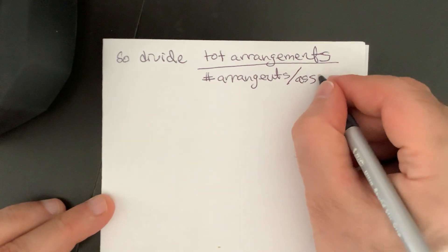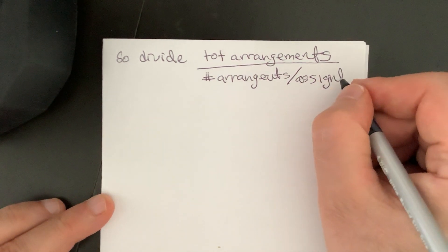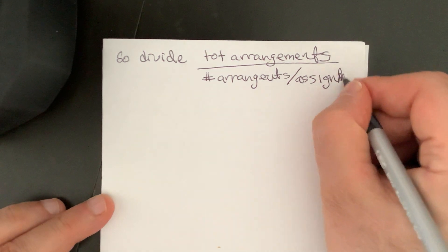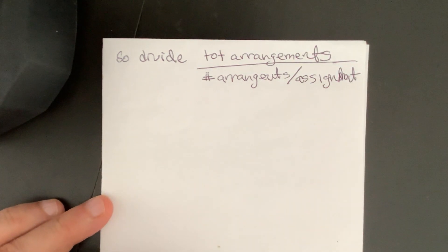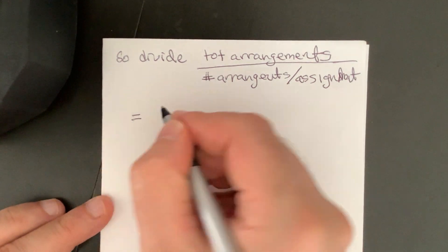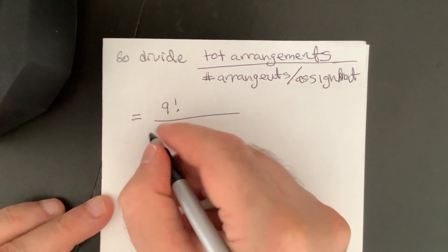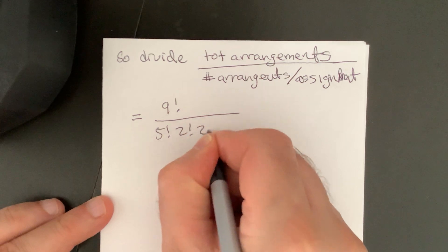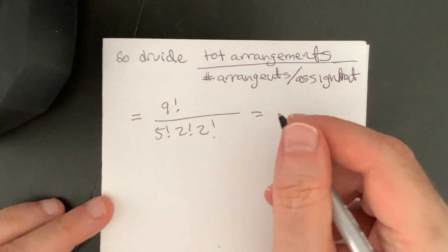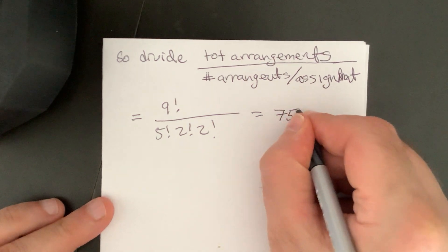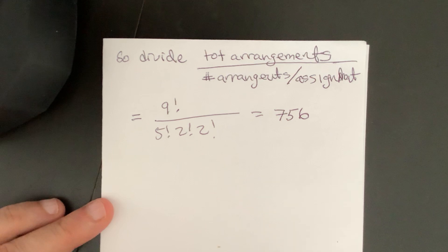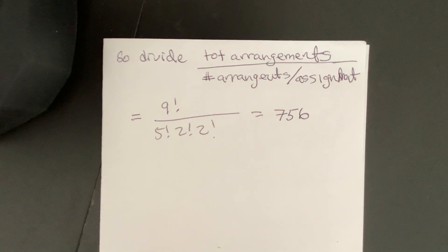Okay. And this should give me 9 factorial over 5 factorial, 2 factorial, 2 factorial. And this is, I just did this, it's 756. 756 different assignments. Okay. I guess it is. That's what I get. Is it? Yeah. Okay. I think so.